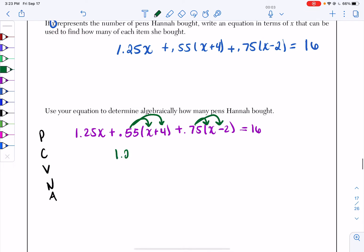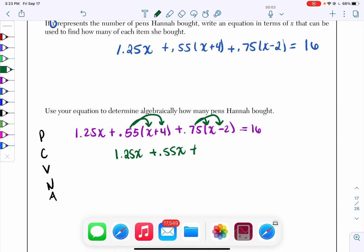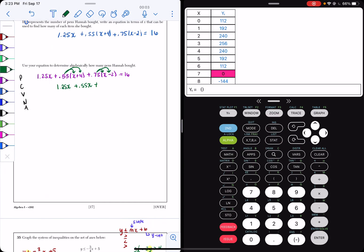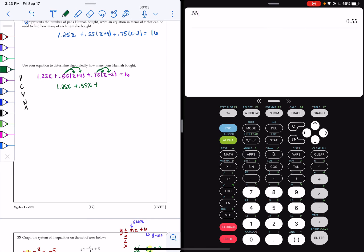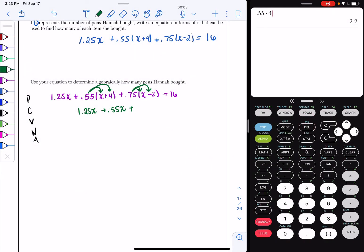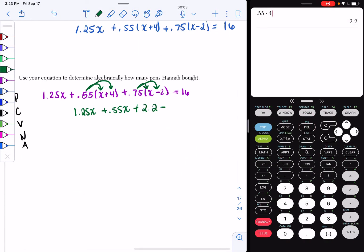So I have 1.25X plus 0.55X plus, I have no idea what 0.55 times 4 is. So let's look. It's 2.2. So I have plus 2.2. Distribute my 0.75 now and I have 0.75X. 0.75 times negative 2 is negative 1.5. So I have minus 1.5 and that's equal to 16.